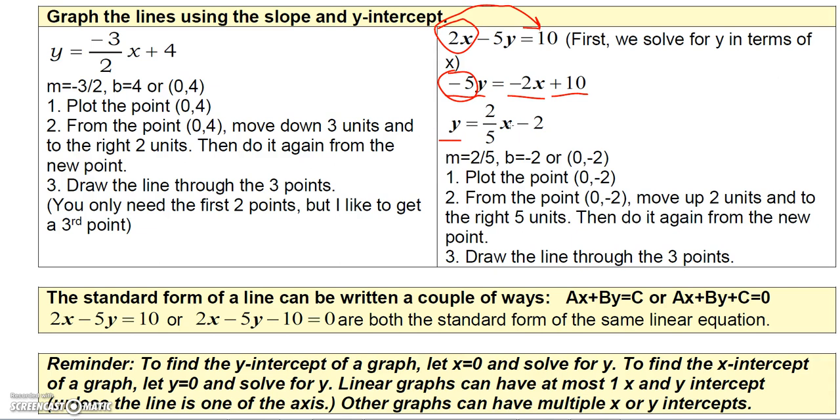If you divide everything by -5, so if you divide this by -5 that'll give you y, and then if you divide -2 by -5 you'll get positive 2/5, and if you divide 10 by -5 you'll get -2. So in this example my slope is positive 2/5 and my y-intercept is -2, or the point (0, -2).